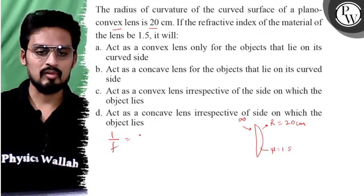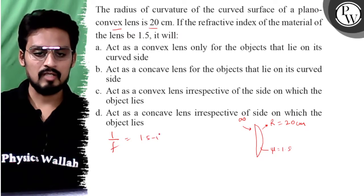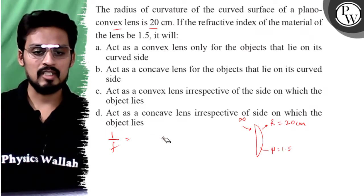So what can I say? This focal length is 1 by f, 1.5 minus 1. We have to write the formula.